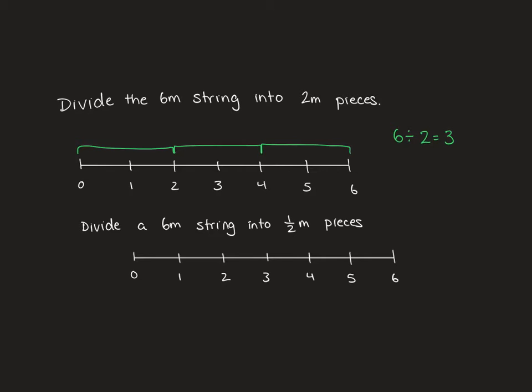For this next example, we're going to take the same 6 meters of string, but instead of dividing it into 2 meter pieces, we're dividing it into half meter. So every half a meter, we'd make a cut. So 1, 2, 3, 4, 5, 6, 7, 8, 9, 10, 11, 12.